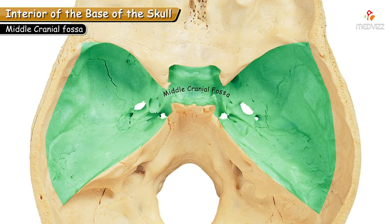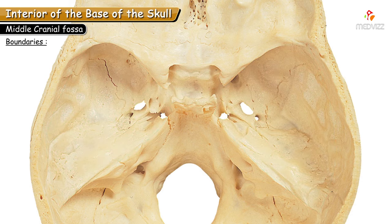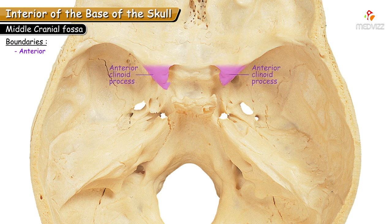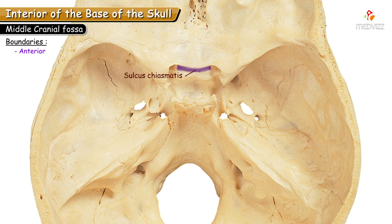Let's study about the middle cranial fossa, which is the middle part of the cranial cavity. It is limited anteriorly by the posterior border of the lesser wing of sphenoid on each side. Medial to the lesser wing of sphenoid, the tooth-like projections are the anterior clinoid processes, and in between the two anterior clinoid processes, the groove is the sulcus chiasmaticus. These structures form the anterior boundary of the middle cranial fossa.